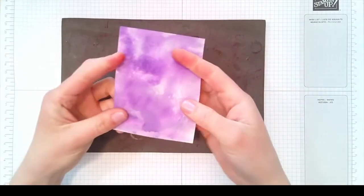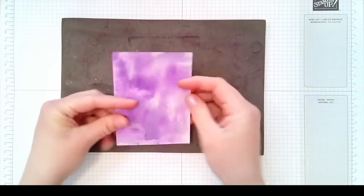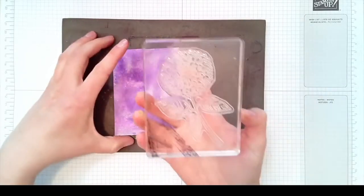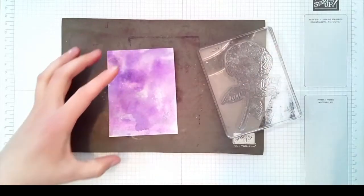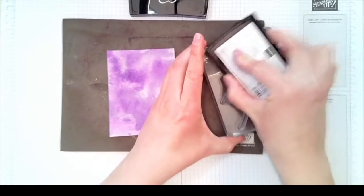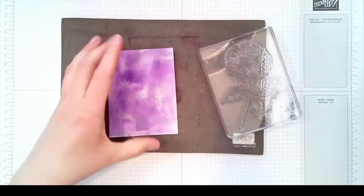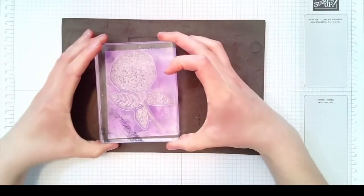Once your piece is all dry you can also use the heat tool to help set it and dry. Take the hydrangea stamp here and I'm going to take some Versamark and ink that up, and we'll stamp that down.